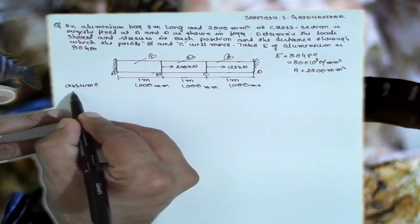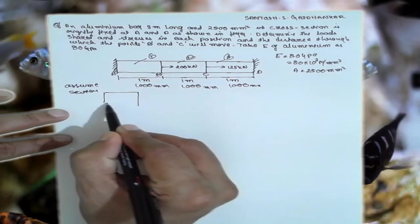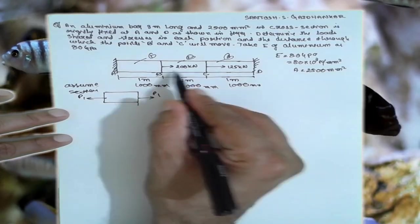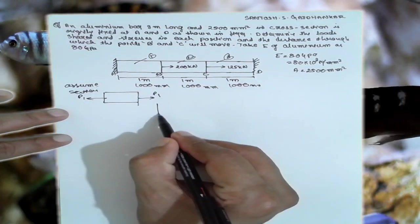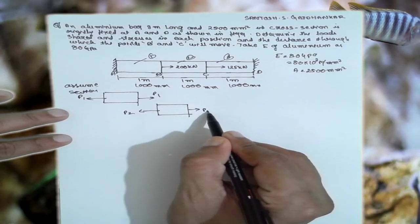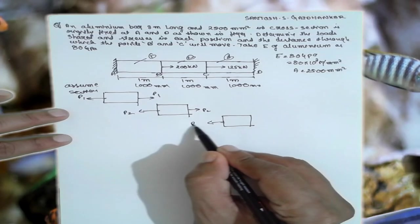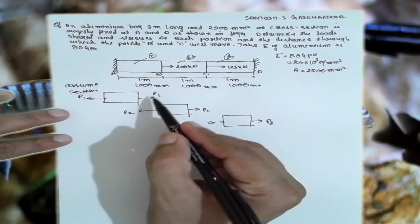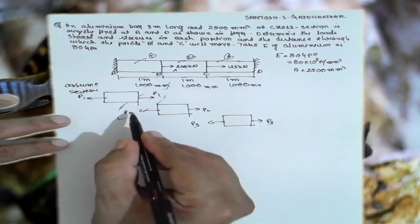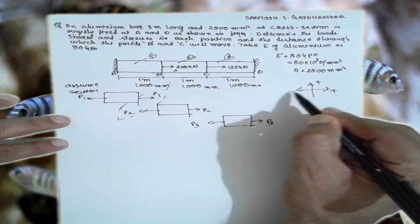First section, or you can consider directly here, assuming it as tensile. I will consider as P1, P1. Next part I will consider here, the two tensile P2, P2. Third part I will consider here, P3, P3. Now based on this one, I will create the equation. That means we are assuming it here: it is positive, positive, negative, negative.